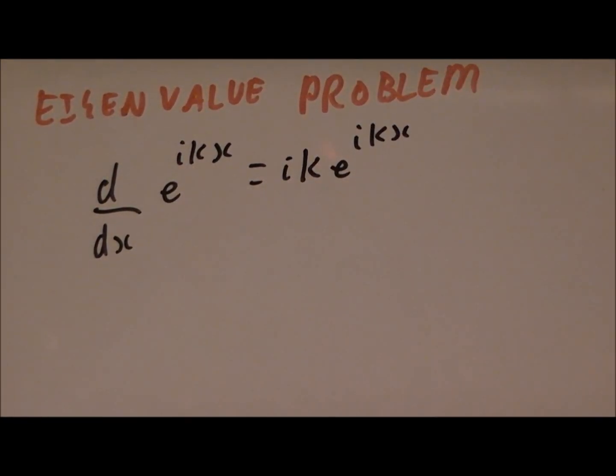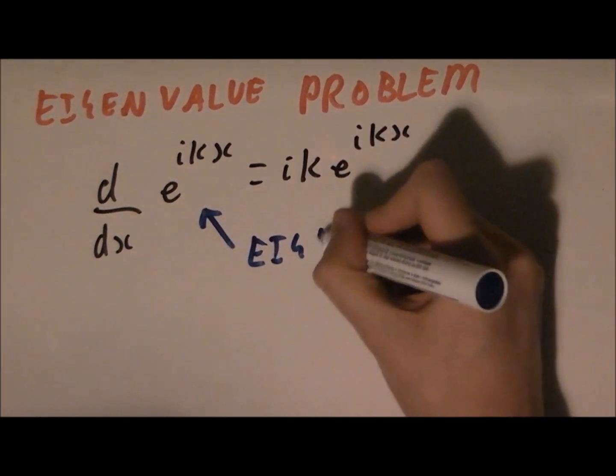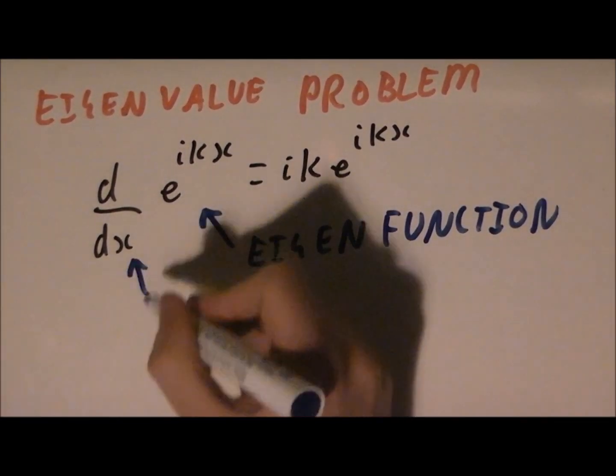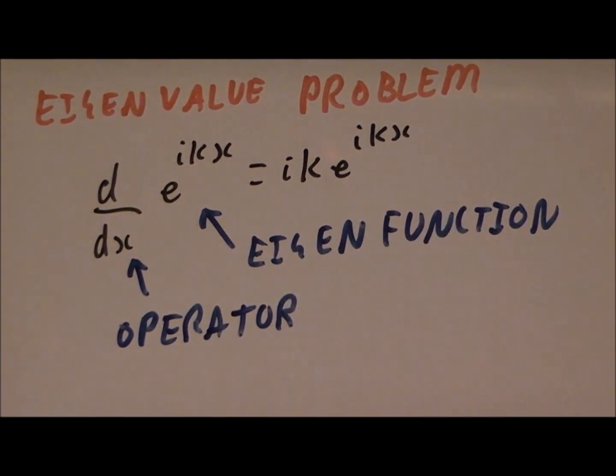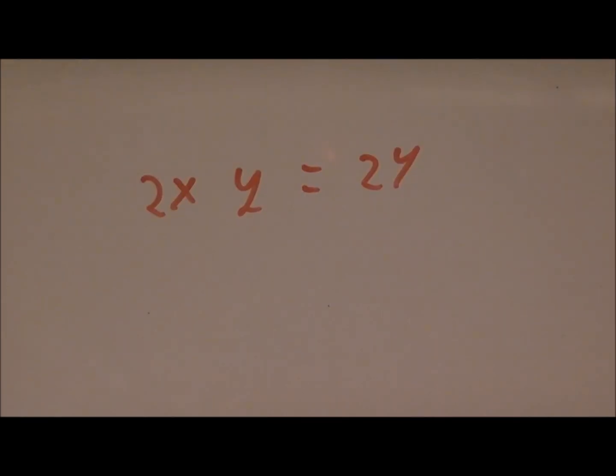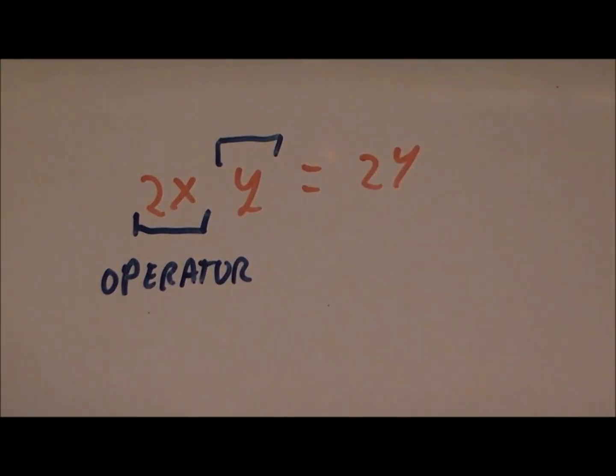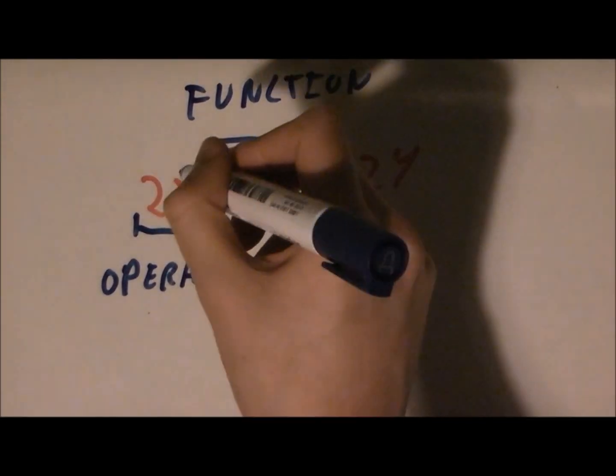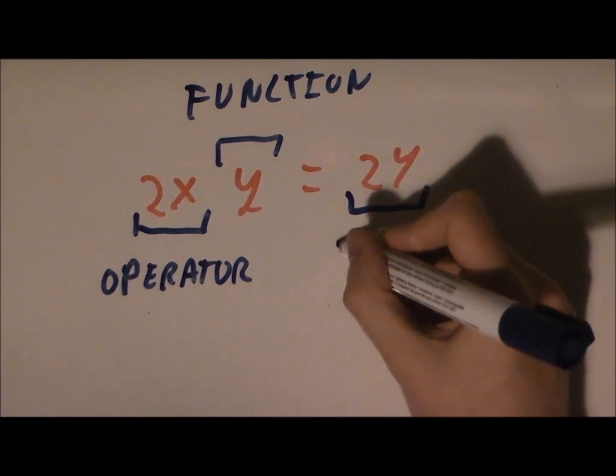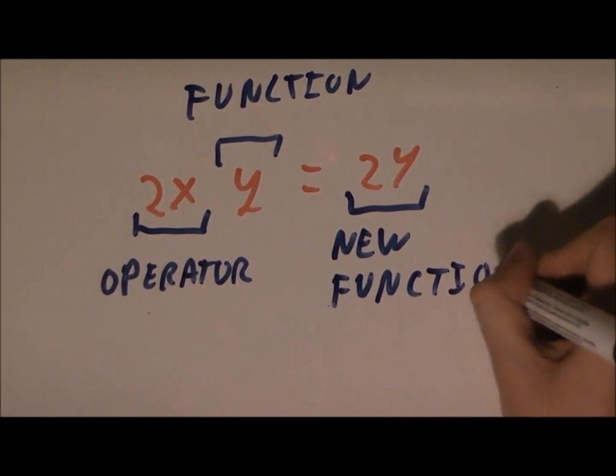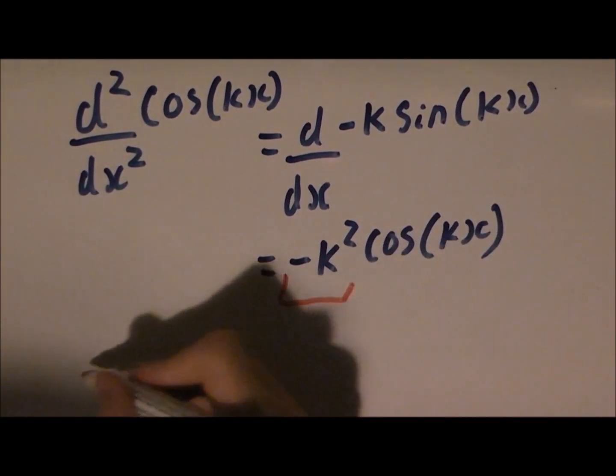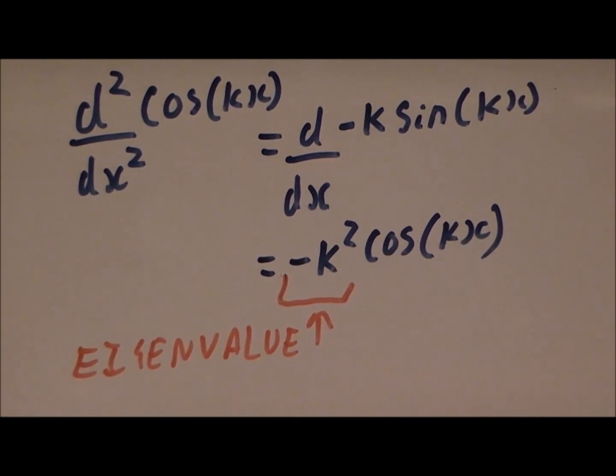I'm just going to make a few points about what we just did. This type of problem is called an eigenvalue problem. We say that this is an eigenfunction of this operator. An operator is just something that you can use on a function to make another function. So this would be a doubling operator applied to the function y. Eigenfunctions of operators are functions which return themselves and an eigenvalue after the operator is used on them, like this. The bit extra is the eigenvalue.